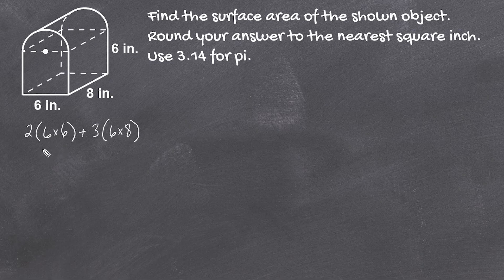Let's simplify this expression. We have 2 times 36 plus 3 times 48. Two times 36 is 72, and 3 times 48 is 3 times 50, which is 150 minus 6, so that's 144. Adding these together gives us 216 square inches. The area of the five exposed surfaces is 216 square inches.